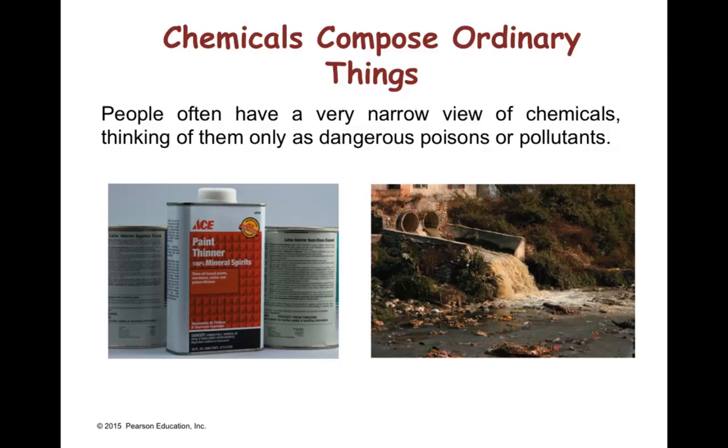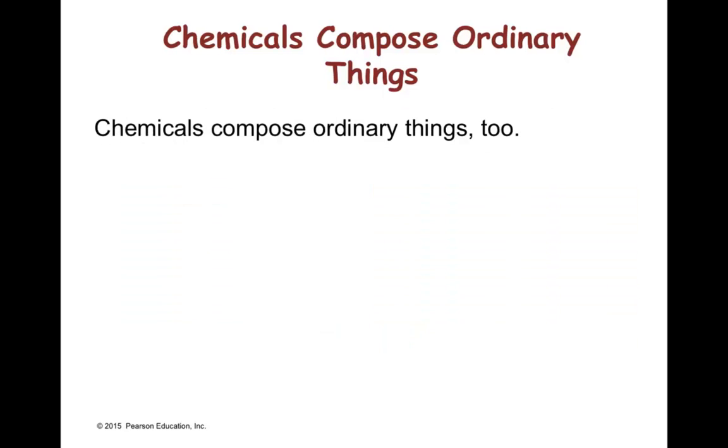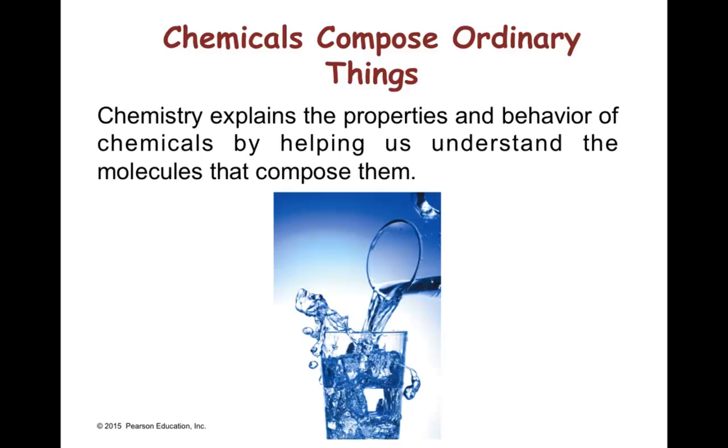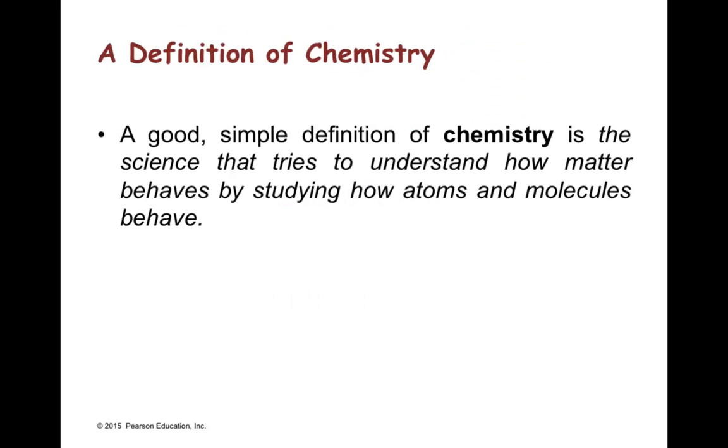Unfortunately, when people think about chemical compounds, they think of them as if they were dangerous poison or pollutants. And for some of them, it is true. But also, there are a lot of ordinary things that are chemical compounds, too, and they are not dangerous. For example, the air we breathe, the water we drink, toothpaste, Tylenol, and toilet paper. So, chemistry explains the properties and behavior of chemicals by helping us understand the molecules that compose them. So, a good definition of chemistry is the science that tries to understand how matter behaves by studying how atoms and molecules behave.